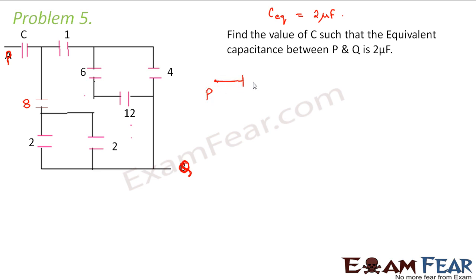So here starts P. From P we have one capacitor C. From this capacitor it goes to two capacitors — one is 1 and the other one is 8. This is capacitor 1 and this is capacitor 8.